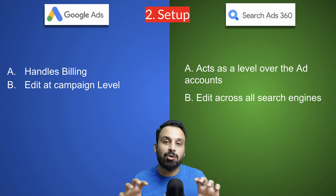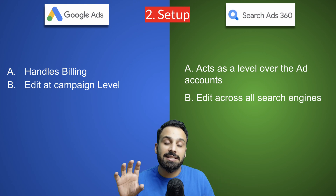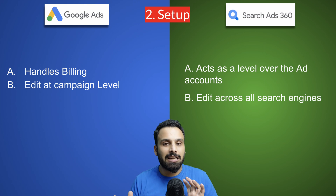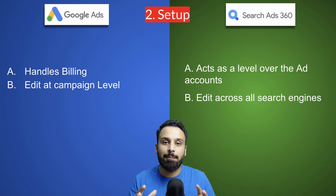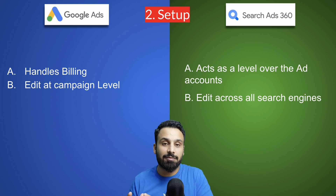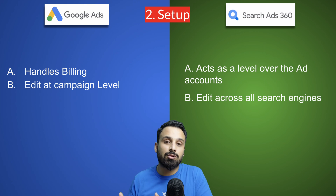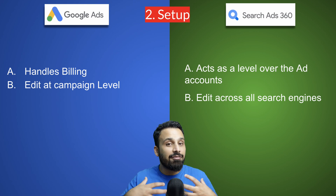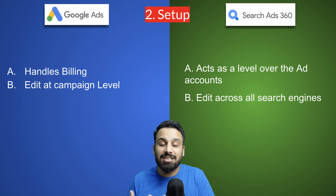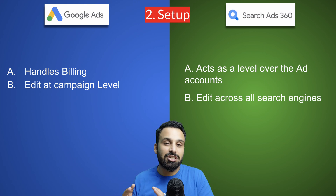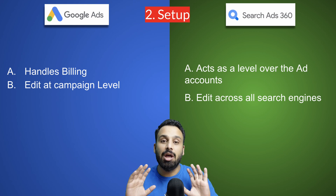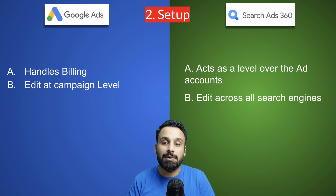Think of Search Ads 360 as a layer sitting over all your search ad accounts where you manage, control, and do all reporting — but the actual campaigns run through platforms like Google Ads and Microsoft Bing. If you need to make a change to campaigns running on multiple platforms, instead of going to each platform individually, you can make the change once in Search Ads 360 and it will be reflected across all accounts.